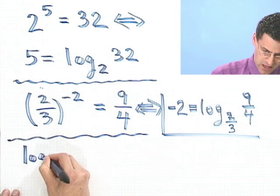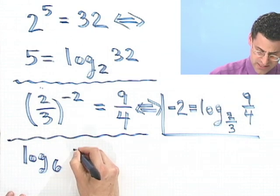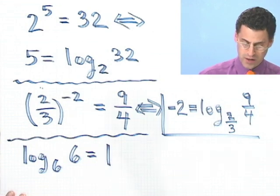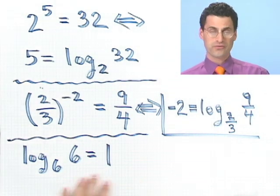So how about this? Log base 6 of 6 equals 1. See if you can convert that to a statement about exponents where it should be very clear that, in fact, this statement is correct. Give it a shot right now.